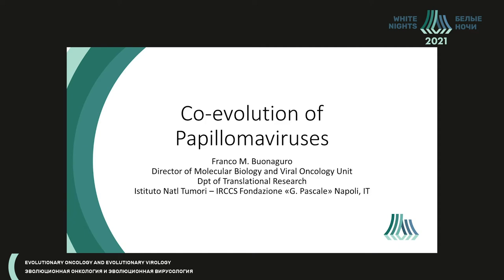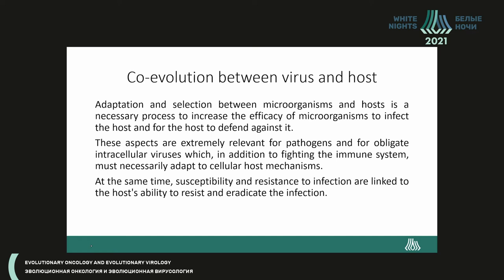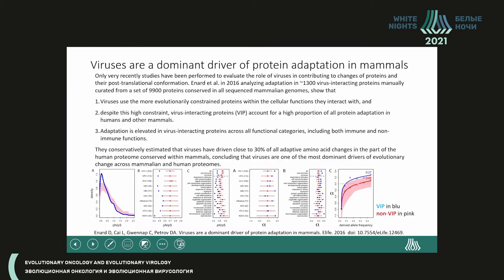What is very relevant in the co-evolution between the virus and host is that the microorganism must adapt to the host and needs to increase the efficacy to infect the host. At the same time, the host must develop a system to defend against the pathogen. These interactions are extremely relevant, and in this contrast between pathogen and host, viruses are a dominant driver of protein adaptation in mammals.